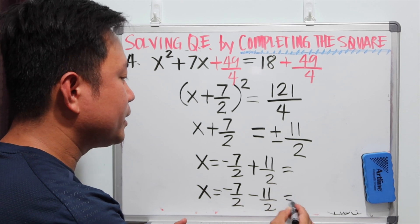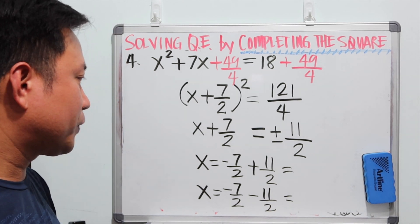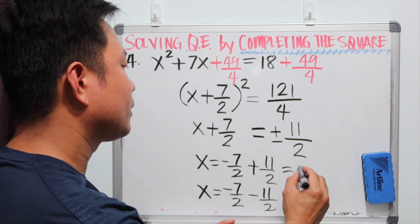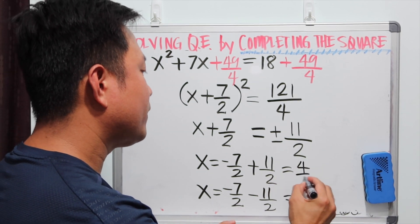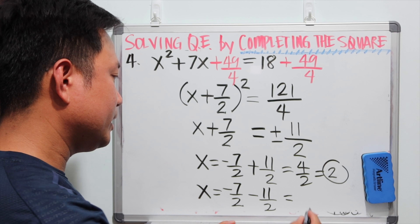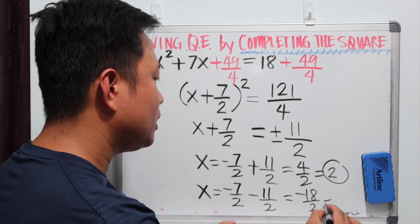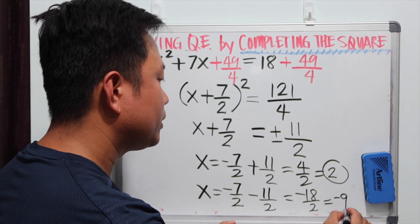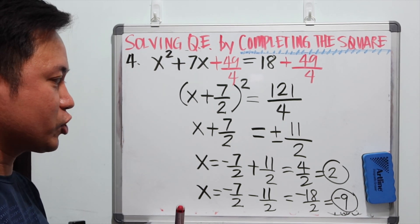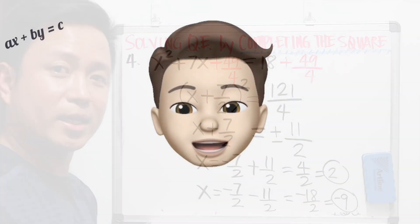Simplifying both values for x: the first one becomes 4 over 2, so x equals 2. The second is negative 18 over 2, which equals negative 9. So the zeros of this quadratic function are 2 and negative 9.